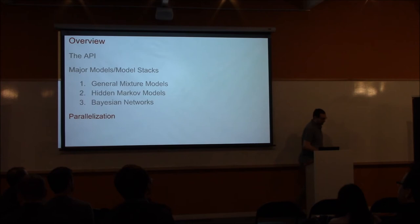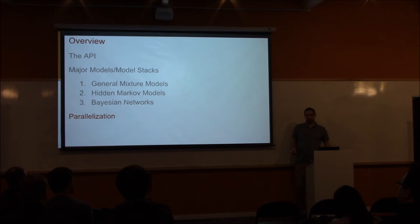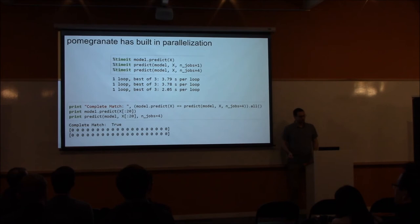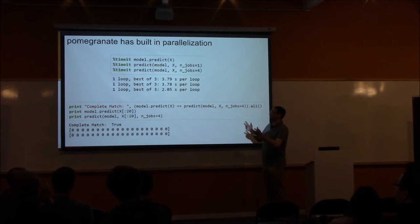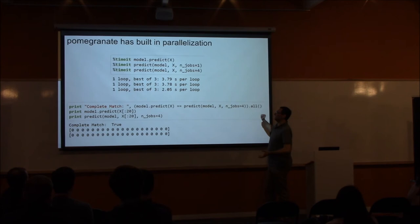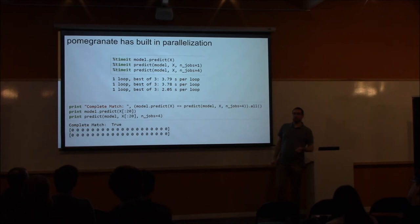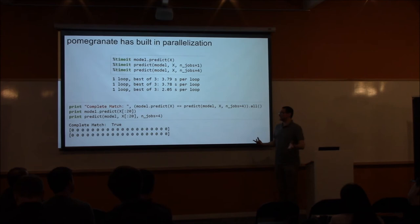Let me show how to do parallelization. I'm in the process of making it so you can just pass an n_jobs parameter to each function, which would be the most intuitive. But in the meantime I've implemented parallelization as wrapper functions that take any model and handle it appropriately. So if you want to do predict, instead of calling model.predict, you call the predict function passing in the model, the data, and the number of jobs. You can see that using one job takes about the same as using the method directly, and using four jobs is about twice as fast. You don't have to worry about race conditions — it returns the labels in the same order you fed the data in, so there's complete consistency regardless of the parallelism.